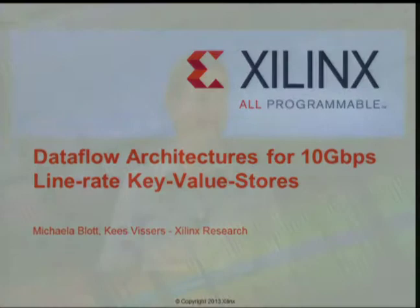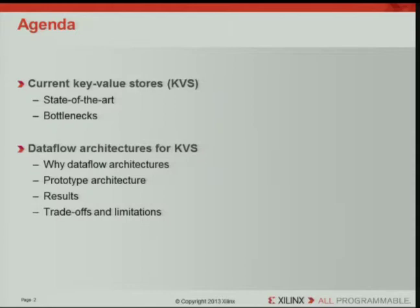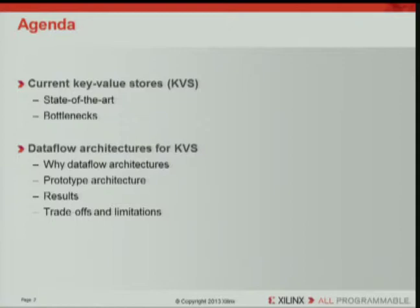The aim behind using data flow architectures was to actually scale the throughput of key value stores to higher levels. Current implementations are limited, and it's very hard to actually get 10 gig line rate. I've structured the talk into two parts. We'll start off with a general section on key value stores — what they are, what the key functionality is, how they're currently implemented, and where the limitations are. In the second section, I'll dive into the data flow architectures, go in depth on the prototype architecture, present results measured in our lab in Dublin, and finish with a discussion of the trade-offs, drawbacks, and limitations, because nothing in this world comes for free.